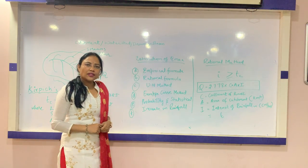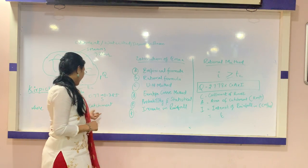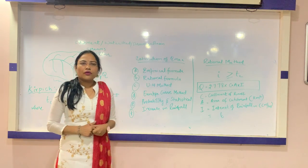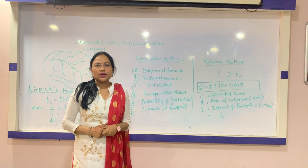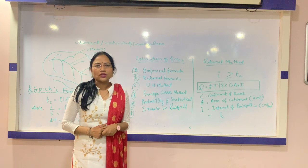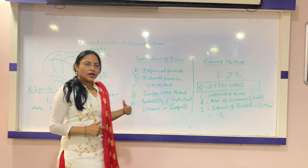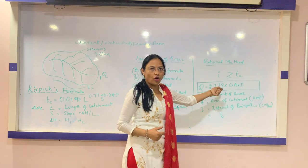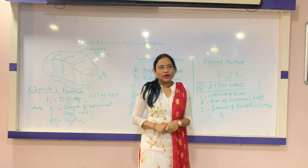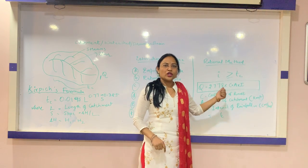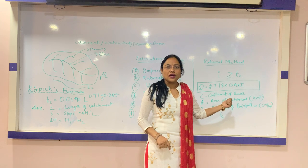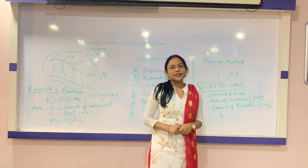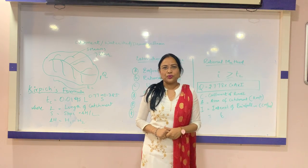After getting the length of the catchment and ΔH, you calculate numerically the time of concentration. Then, if the known intensity of rainfall is greater than the time of concentration, you apply the rational method to find out the design flood or the design discharge. Thank you.